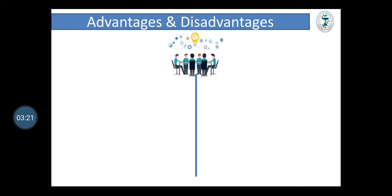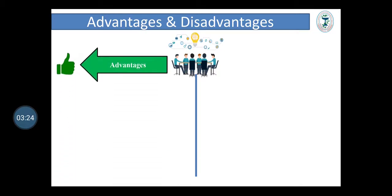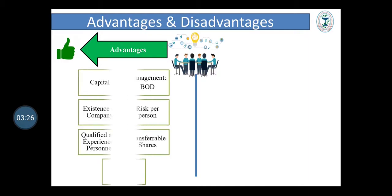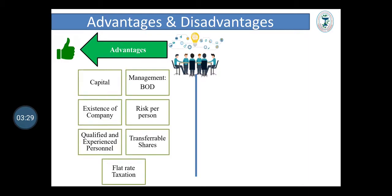Advantages and disadvantages of joint stock company — let's start with advantages. Capital: capital can be collected in large amounts. Management: the company is managed by the board of directors who are elected by shareholders; thus the major policy decisions are taken by shareholders. Existence of company: insolvency, insanity or death of members has no effect. Risk per person: it is reduced because it is diffused and spread over several members of the company.